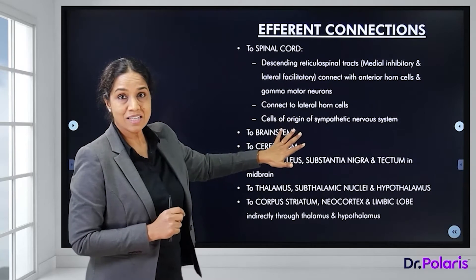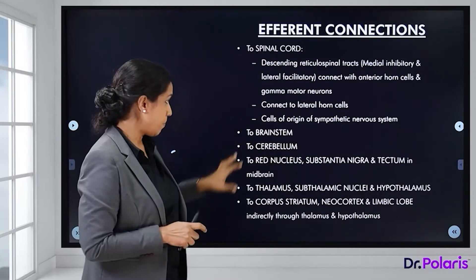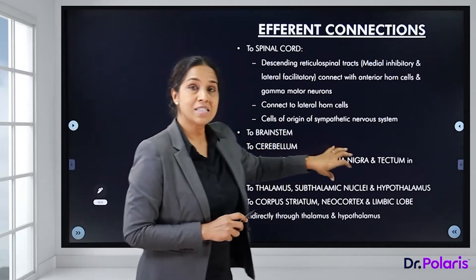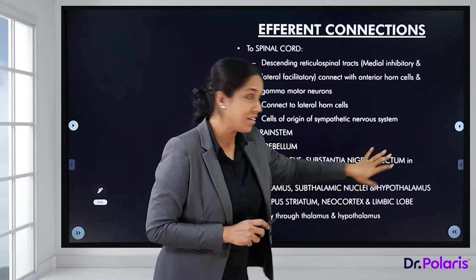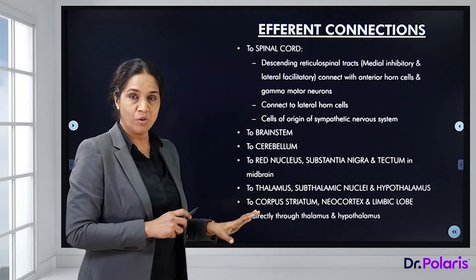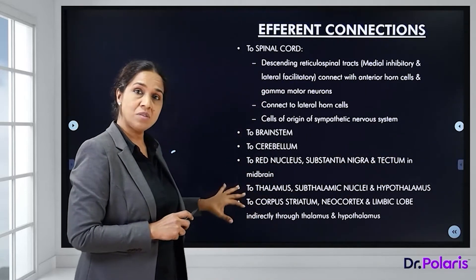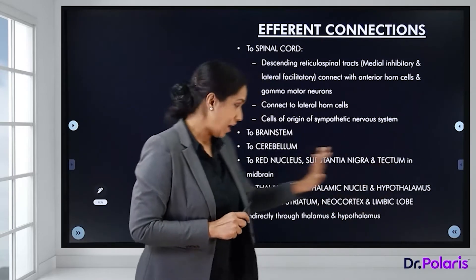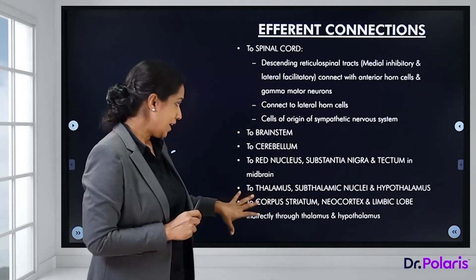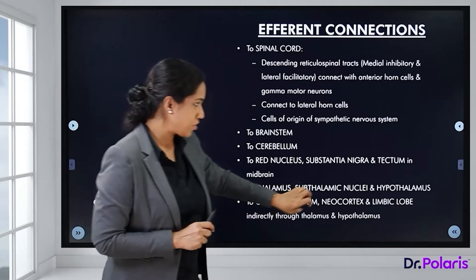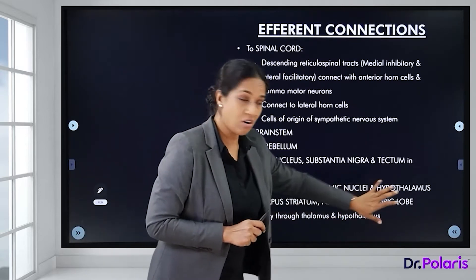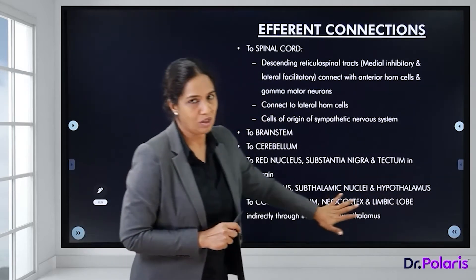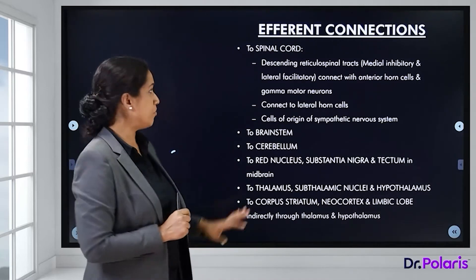The reticular formation is also connected to the lateral horn cells, where the cells of origin of the sympathetic nervous system arise. It also sends efferent fibers to the brainstem, cerebellum, red nucleus, substantia nigra, and tectum in the midbrain, as well as to the thalamus, subthalamic nuclei, hypothalamus, corpus striatum, neocortex, and the limbic lobe indirectly through the thalamus and hypothalamus.